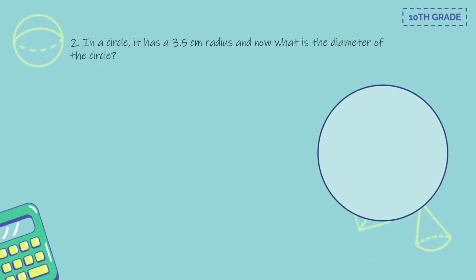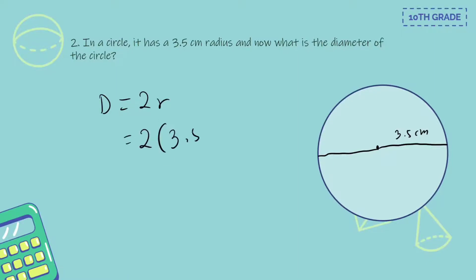Number two — in a circle with a radius of 3.5 cm, what is the diameter? So D equals 2R — 2 times 3.5 cm. That's 7 cm.